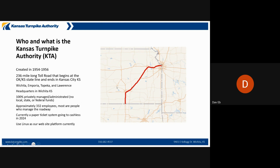The interesting thing about the turnpike is that we are 100% privately managed. We have no outside funding from state, local, or federal entities. All our money comes from the tolls that we collect on the turnpike. We have roughly 332 employees, most of whom are maintenance folks on the roadway every day, making sure everything is safe and working correctly.